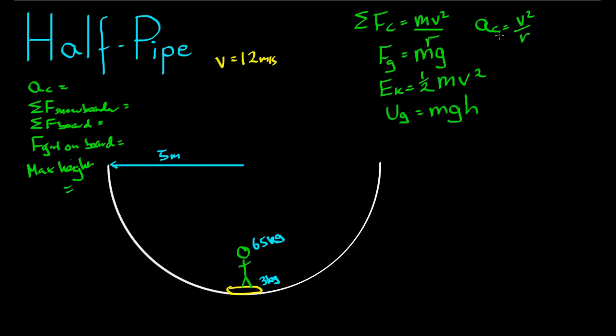And if we want to find the force, all we've got to do is multiply. If F equals MA, we multiply this formula by M to get the force formula. So AC is equal to V squared on R, that's 12 squared on 5. That comes to 24 meters per second squared. That is our centripetal acceleration. I have one more unknown I want to find. I want to find the normal force on the board by the half pipe.